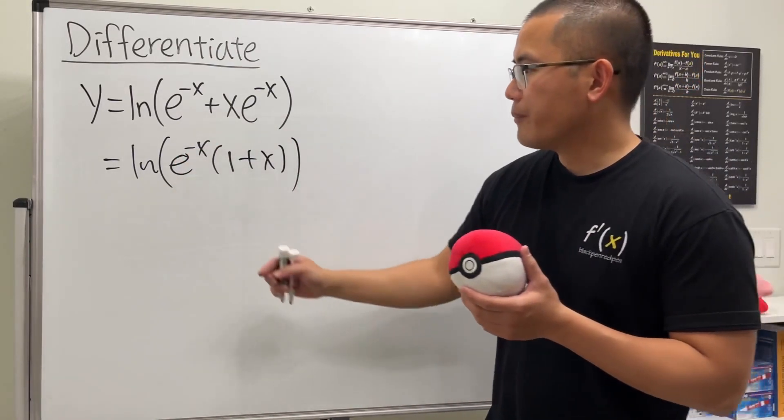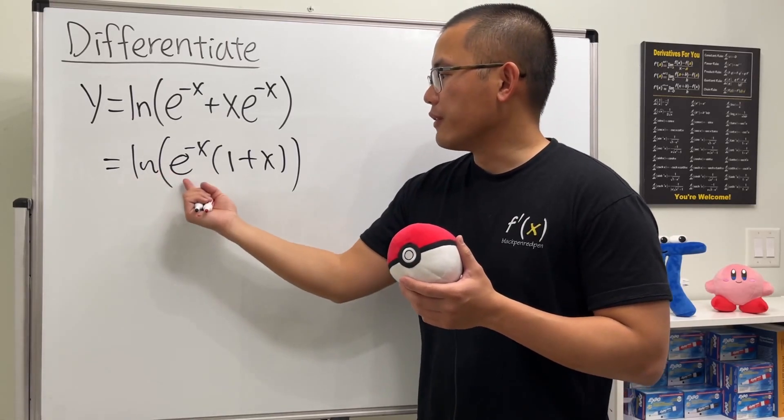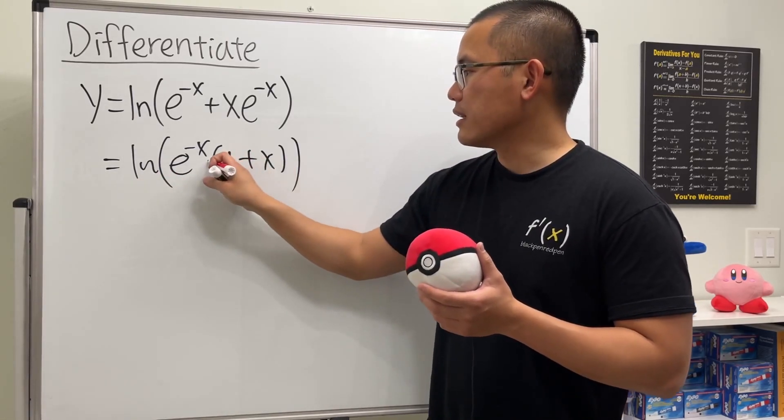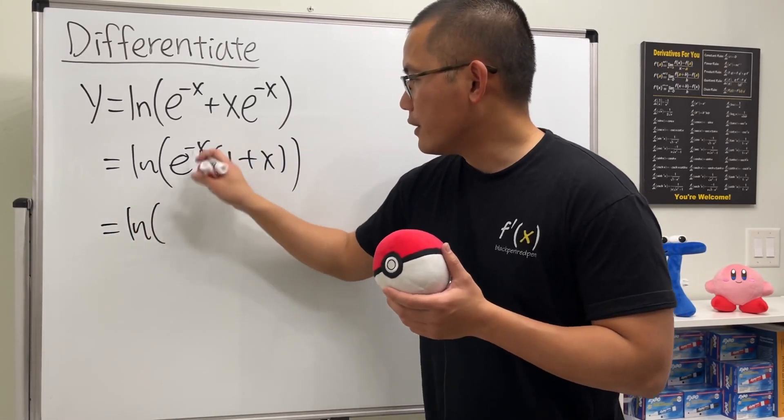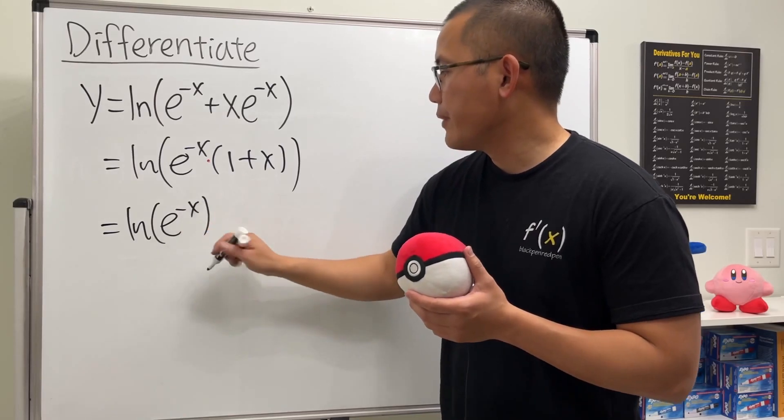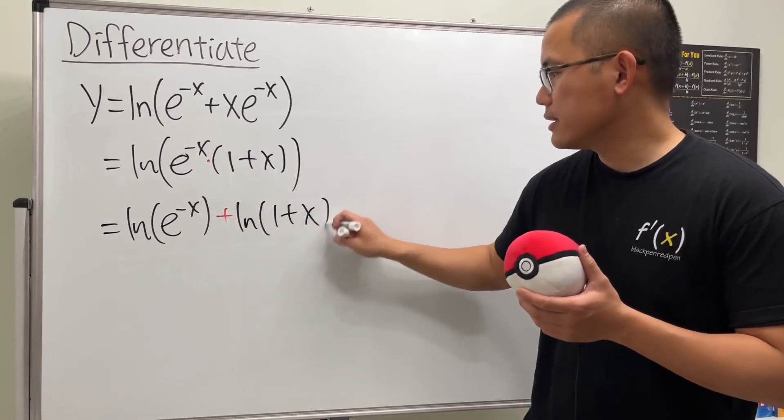And this is good because now, thanks to the log property, we can break this down into ln of the first plus ln of the second, right? Because this is a product. So here, we will have ln of the first, which is e to the negative x, and then we add ln of the second, which is 1 plus x inside.